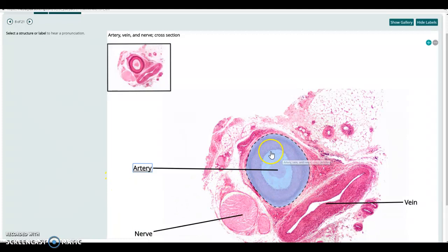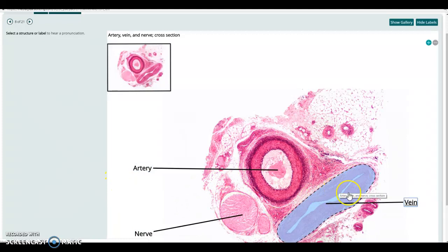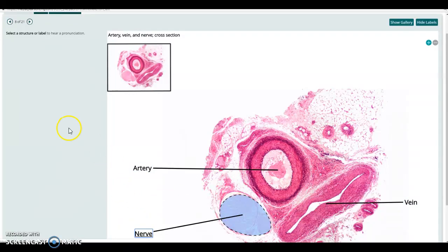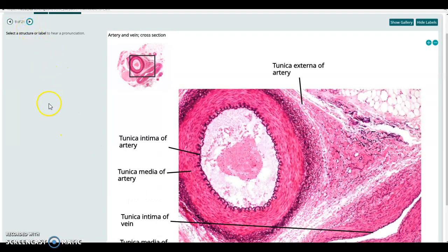And you can see the artery is nice and round and held open. The vein has a much flimsier wall and tends to get squashed down like that. And of course, we'll see these up close with some of the details.